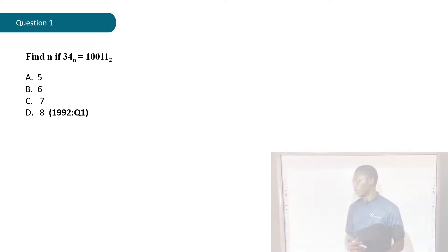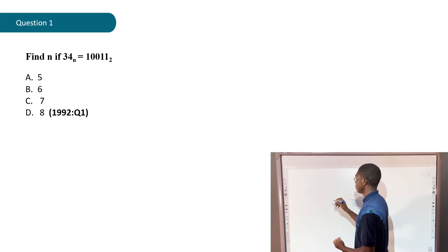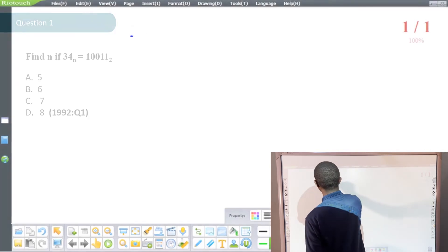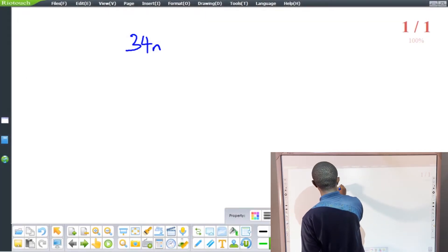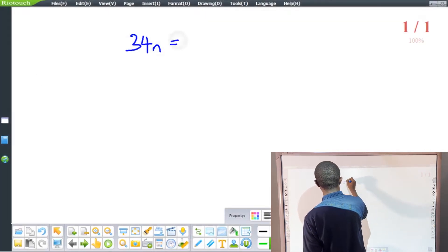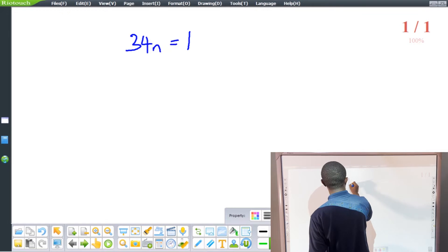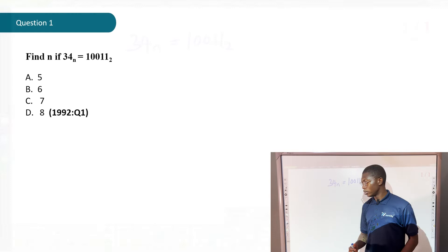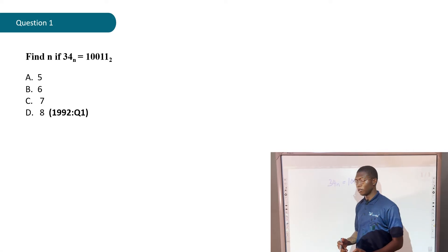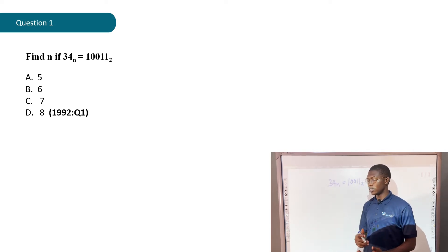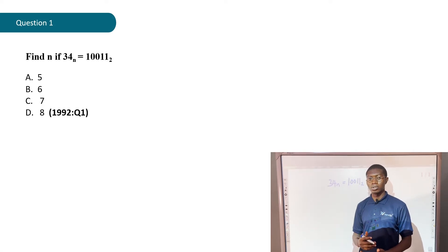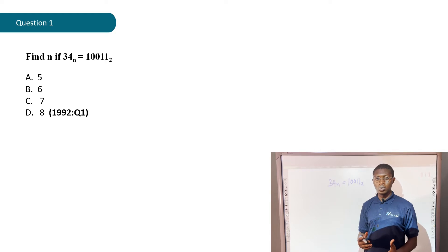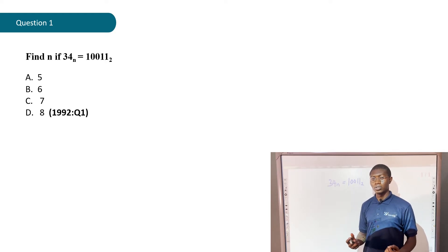The question says: find n if 34 base n equals 10011 base 2. Option A is 5, option B is 6, option C is 7, and option D is 8. I suggest you give it a try before looking at the solution.